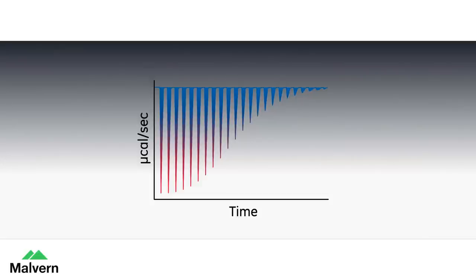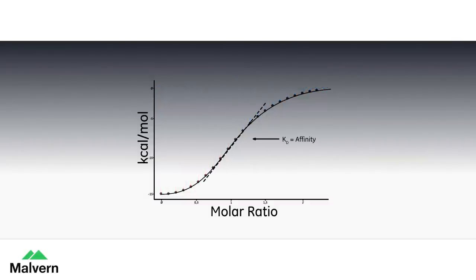The area of each peak is then integrated and plotted versus the molar ratio of ligand to protein. The resulting isotherm can be fitted to a binding model from which the affinity, Kd, is derived.